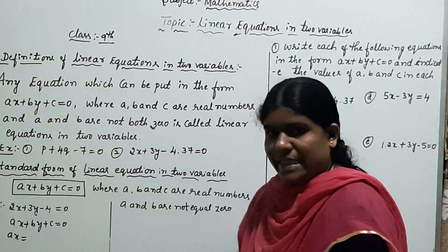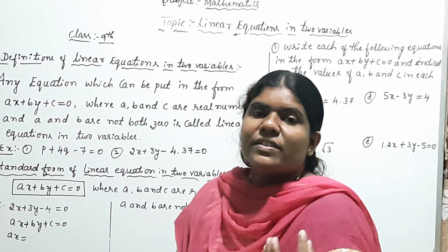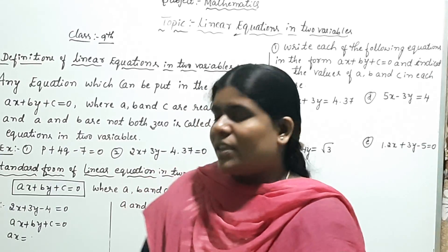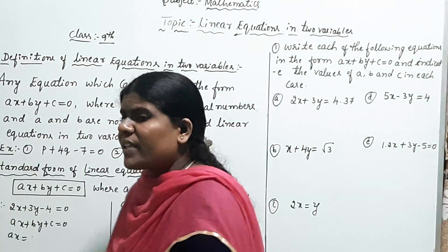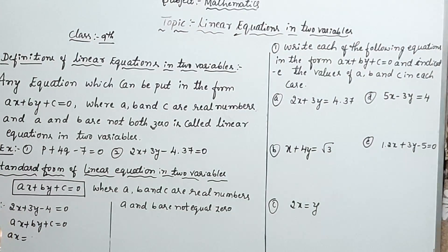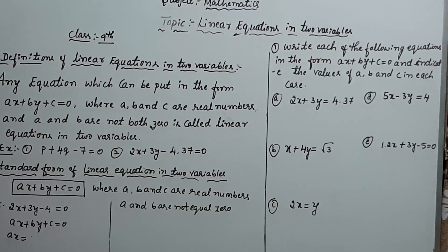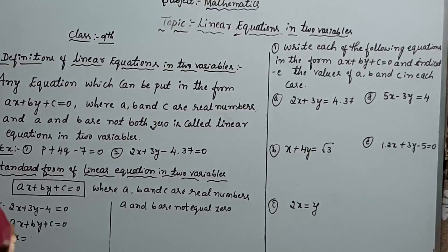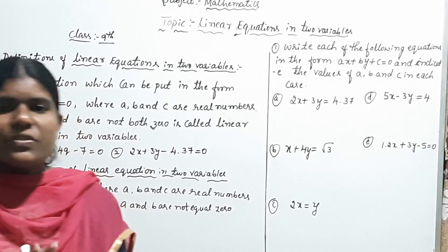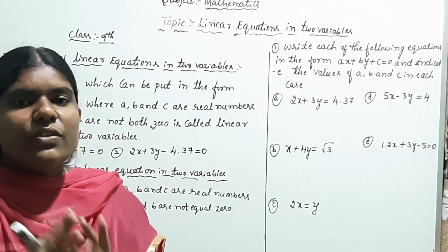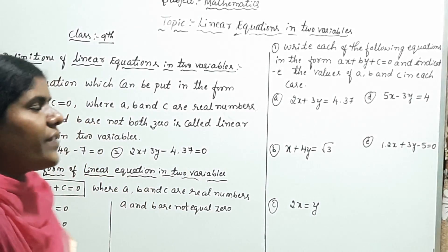Here I will consider one example. Find the value of A, B, and C. The example is 2X plus 3Y minus 4 is equal to zero. Observe carefully — first verify whether the given equation is a linear equation in two variables by comparing with the standard form AX plus BY plus C equals zero.